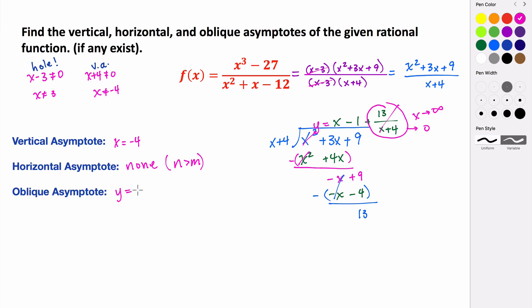So the oblique asymptote is just going to have the equation y equals x minus 1. So we have an oblique asymptote with a slope of 1 and a y-intercept of negative 1. And the way that we found that is we just did the long division between our polynomial in the numerator and denominator.